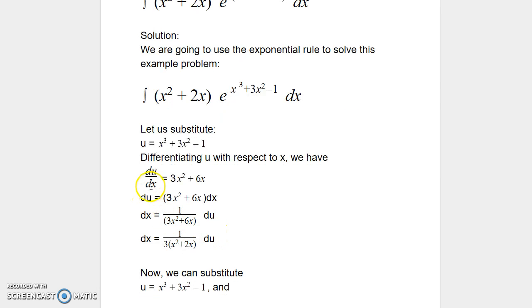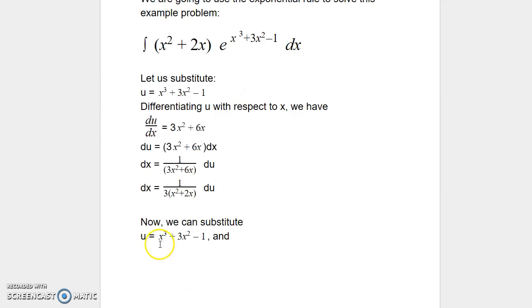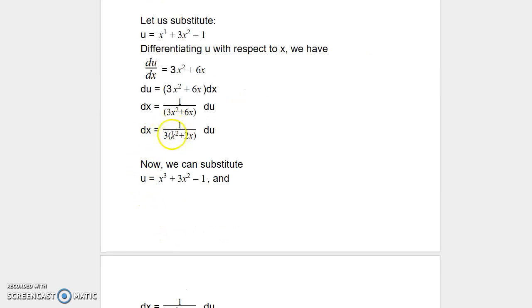So du/dx = 3x² + 6x, which I can express as du = (3x² + 6x) dx. If I have to express it in terms of dx, I can write dx = 1/(3x² + 6x) du. Since 3 is common between 3x² and 6x, I can factor it out, so dx = 1/(3(x² + 2x)) du.